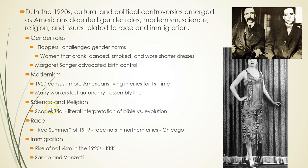The Sacco and Vanzetti trial, like the Scopes trial, became one of the trials of the decade — a national sensation with people on both sides arguing about guilt and innocence. They were executed in 1927. It came to represent the plight of immigrants in the country. Recent ballistic analysis suggested Sacco was probably innocent and Vanzetti was probably guilty, though work on the case has not fully stopped.